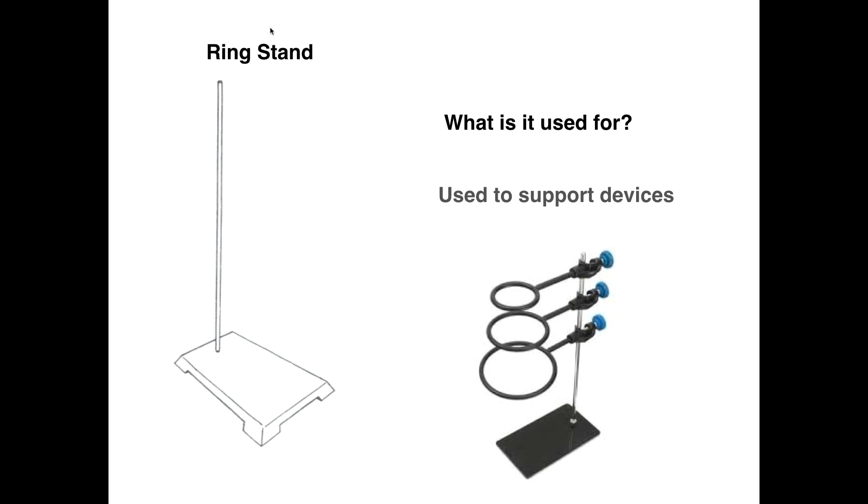Ring stands. Ring stands are pretty generic. They're used to support devices. We may have already used it to hold on to something other than an iron ring, but iron rings are probably the most common thing you attach to a ring stand. But just be aware that ring stands are used to support many different devices. You can use them to hold on to pH probes, thermometers. A whole bunch of other things can be attached to ring stands.